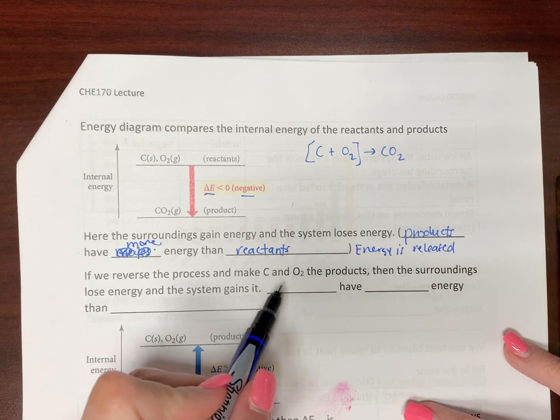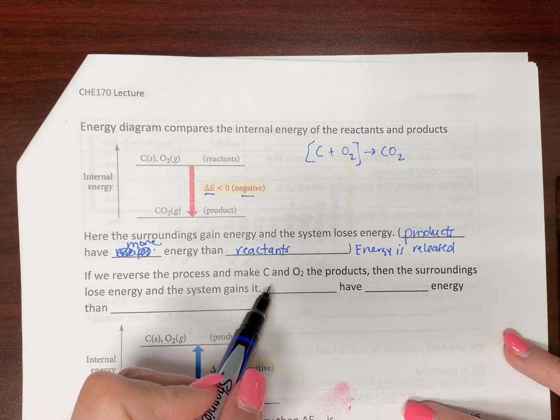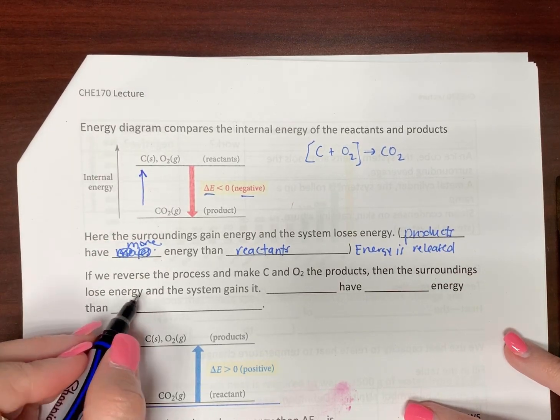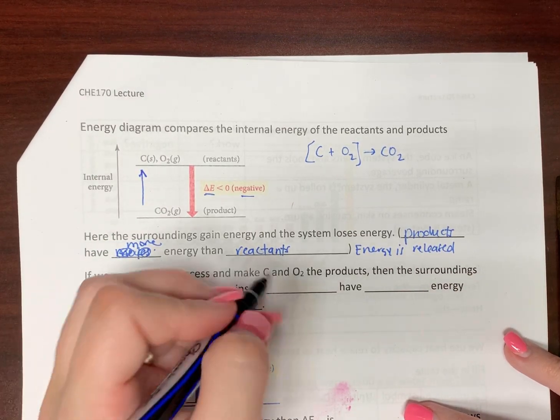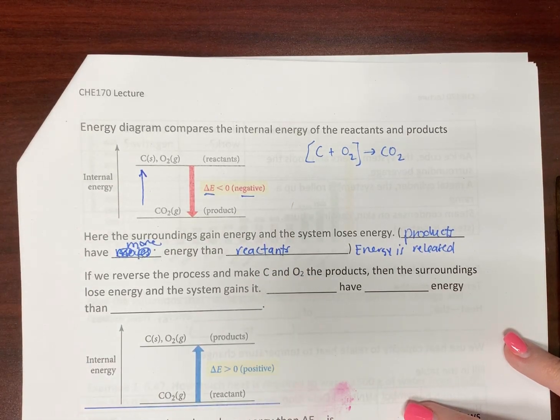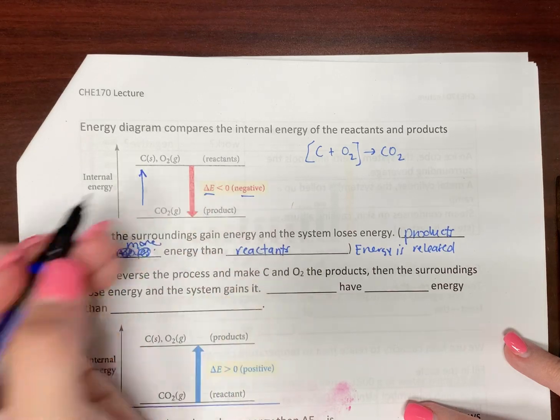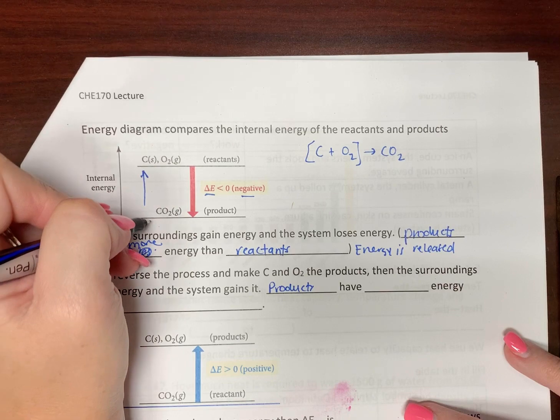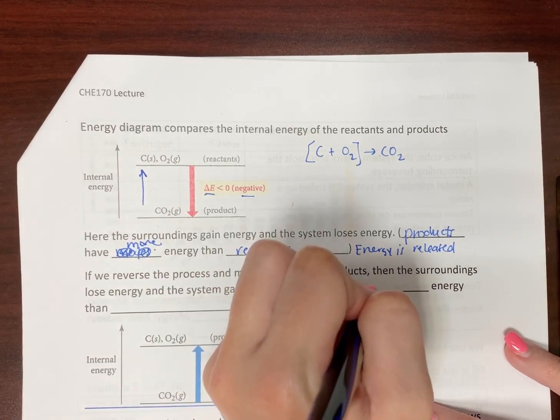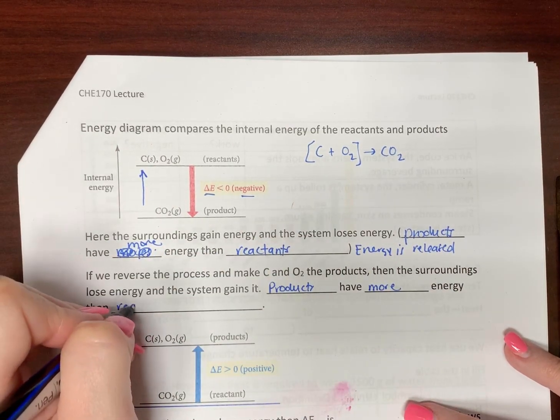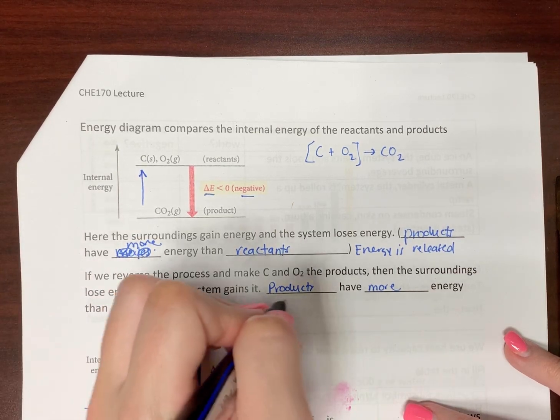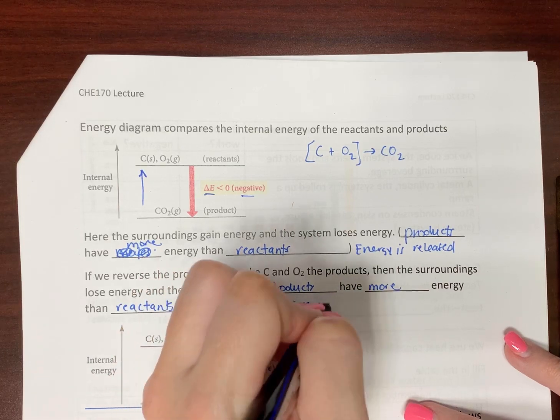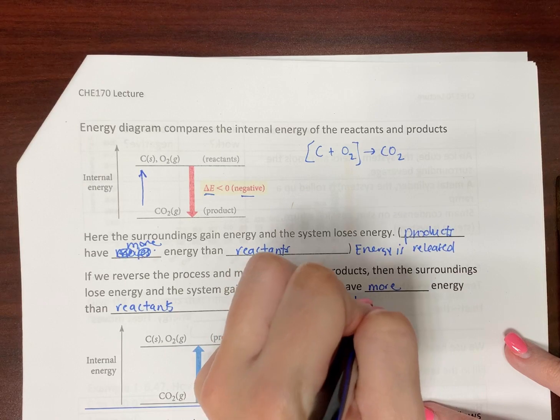But, if we reverse the process and make, if we go the other way, then the surroundings lose energy. The system gains it. And, in that case, your products, because these become the products, and these are the reactants, they have more energy than the reactants. So, energy is absorbed by the system.